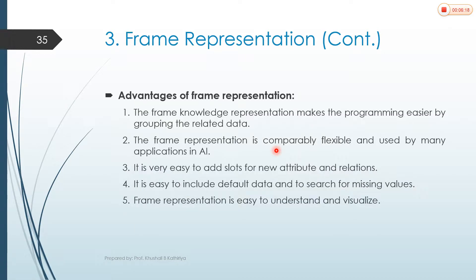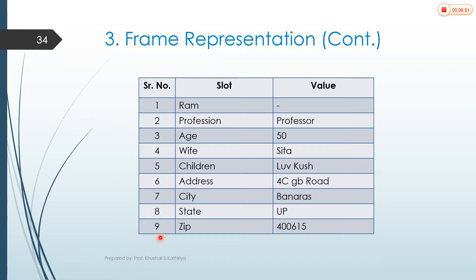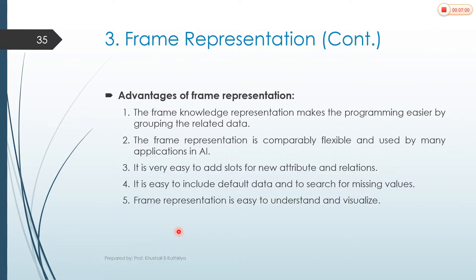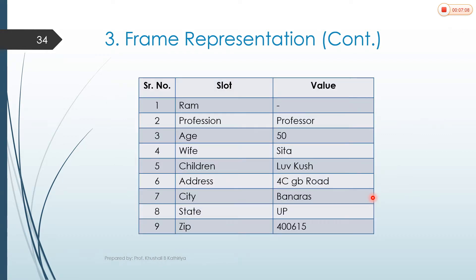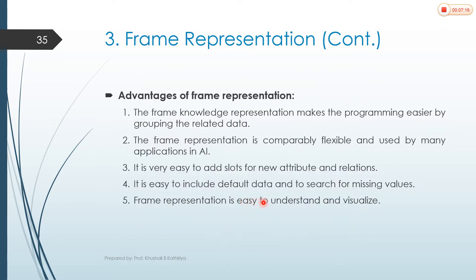The advantages of frame representation are: frame knowledge representation makes programming easier by grouping related data. Frame representation is comparably flexible and used by many applications in AI. It is very easy to add a slot for a new attribute or new relation — we only need to add a new slot number, slot name, and value. It is also easy to include default data and search for missing values — if any data is missing in a slot value, we can easily identify it from the frame representation.